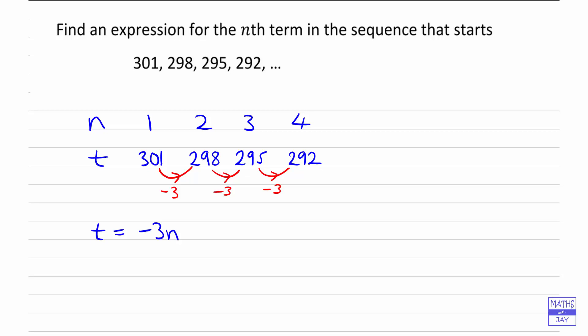Now we know that's not going to be enough to give us the whole formula, because if we just had that, it would give us -3, -6, -9, -12, and so on.